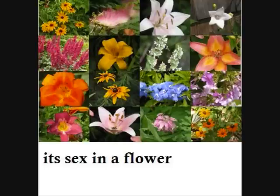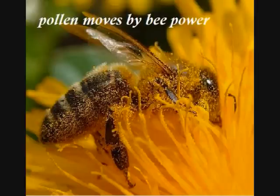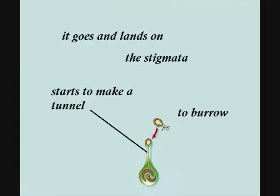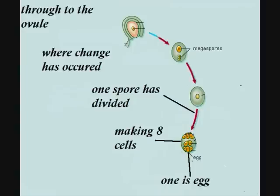It's sex in a flower. Then pollen moves — baby power — it goes and lands on the stigma, and starts to make a tunnel to burrow toward the ovule.